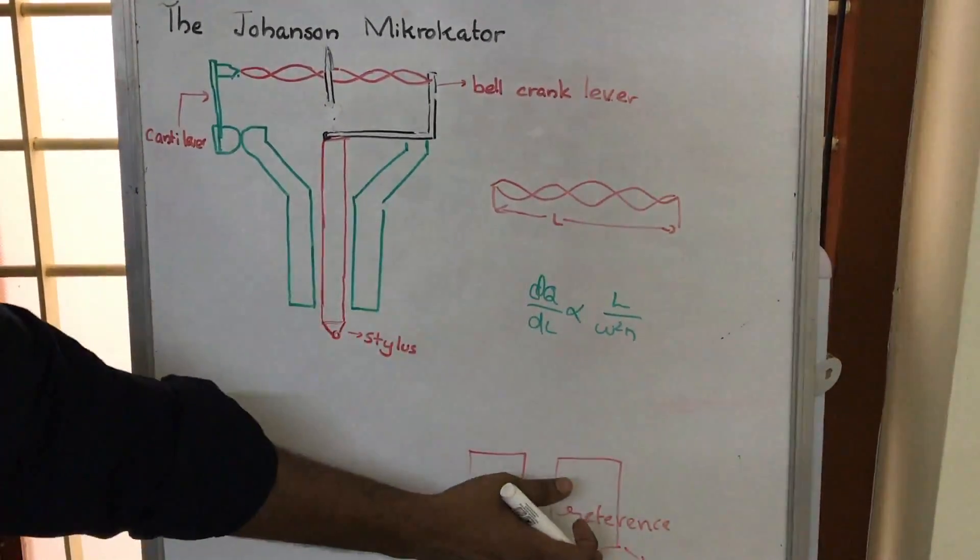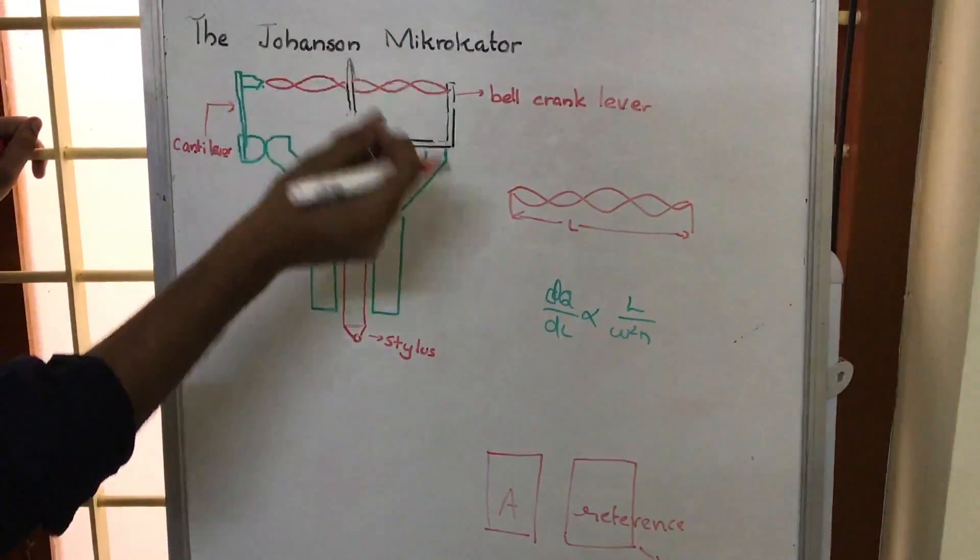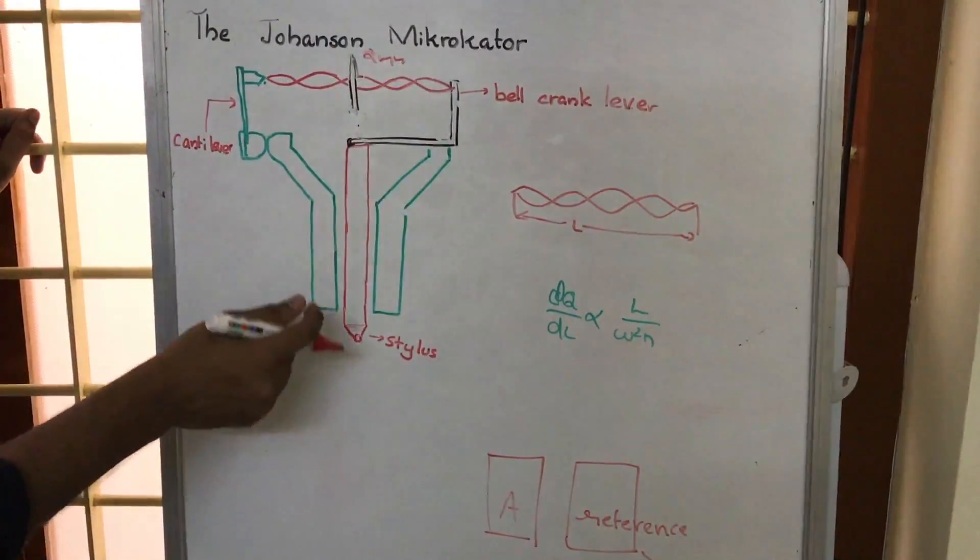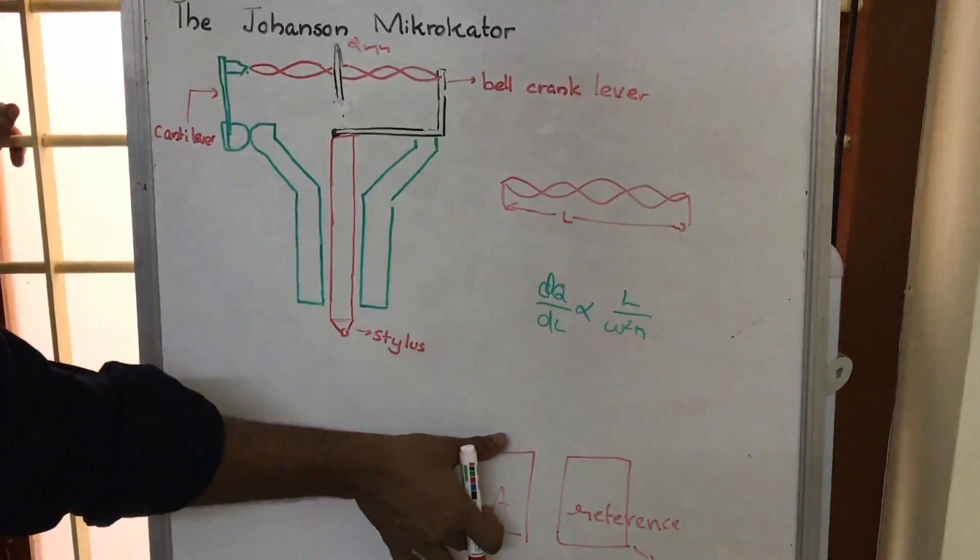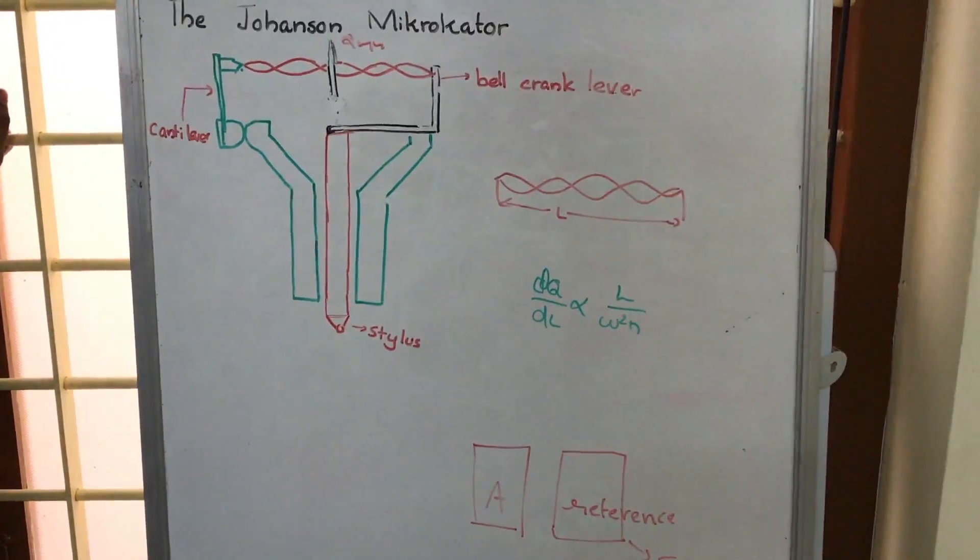Suppose the reference is 5 cm and the needle has moved to show a difference of positive 2 mm. Then the height of body A is 5 cm, that is 50 mm, plus 2 mm, which equals 52 mm.